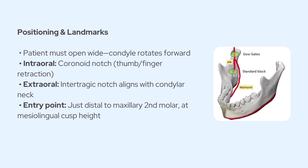To get your orientation, you'll want to find a couple of key landmarks. Internally, your thumb or index finger should rest in the coronoid notch to help retract the tissues. Externally, you can use the intertragic notch of the ear — it lines up nicely with the neck of the condyle, which is basically your target for the anesthetic. Then you apply your topical anesthetic just distal to the maxillary second molar around the height of the mesiolingual cusp. That's also your needle insertion point.